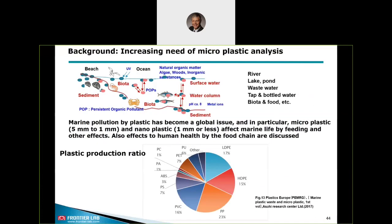This diagram is showing the global plastic production ratio. You see the main contributors like polypropylene, polyethylene, PVC, or polystyrene, etc. So we need to have a method to identify and quantify all these waste microplastics in various kinds of environmental matrices.